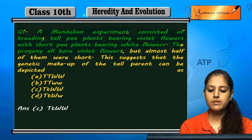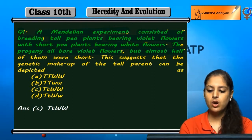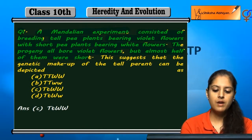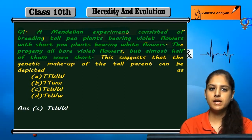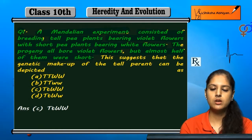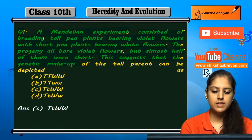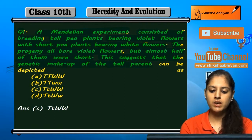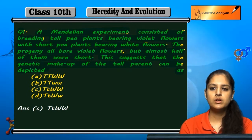The progeny all had violet flowers — all the offspring had violet flowers — but almost half of them were short. All of them were violet but half were short, not tall. This suggests that the genetic makeup of the tall parent can be depicted as — in which way?